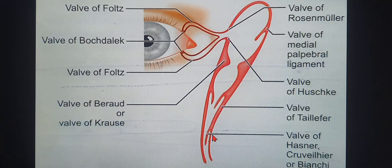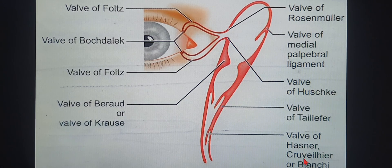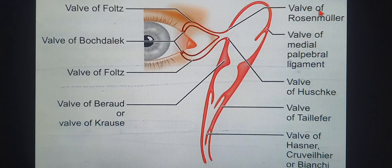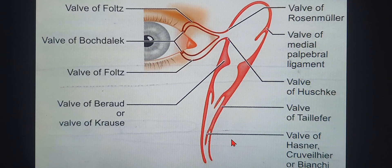The really important one is the valve of Hasner. A viva question I got in my residency exam was: what is the other name of the valve of Hasner? The valve of Hasner is also called the valve of Krivelier or the valve of Bianchi - so there are three names for this valve. At least remember: valve of Rosenmuller, valve of Hasner (with its three names), and the valve of Husky, which is directly beneath the valve of Rosenmuller.